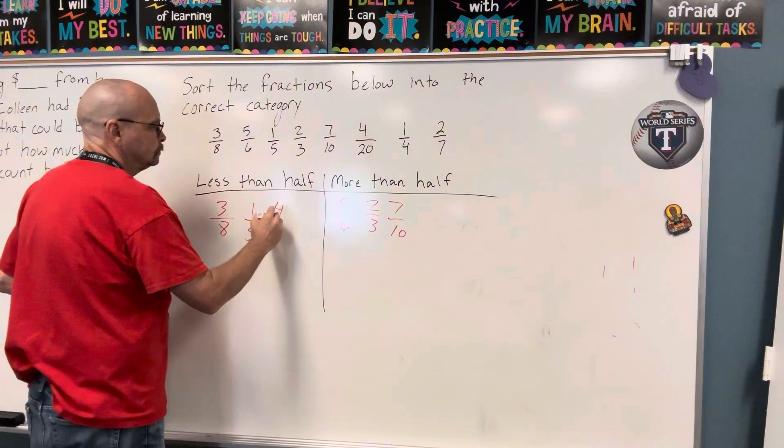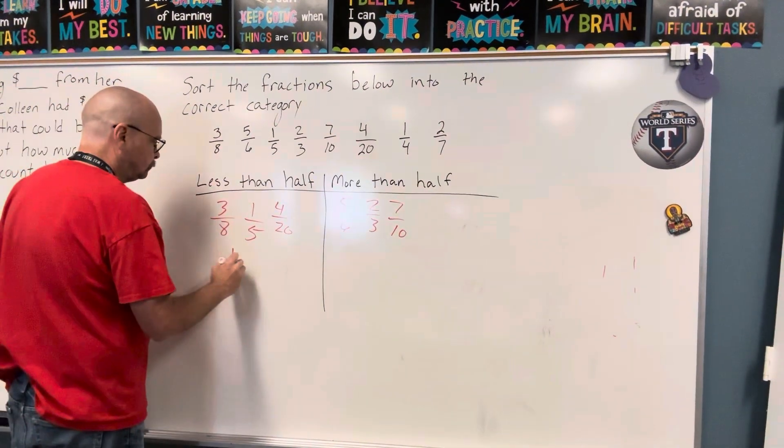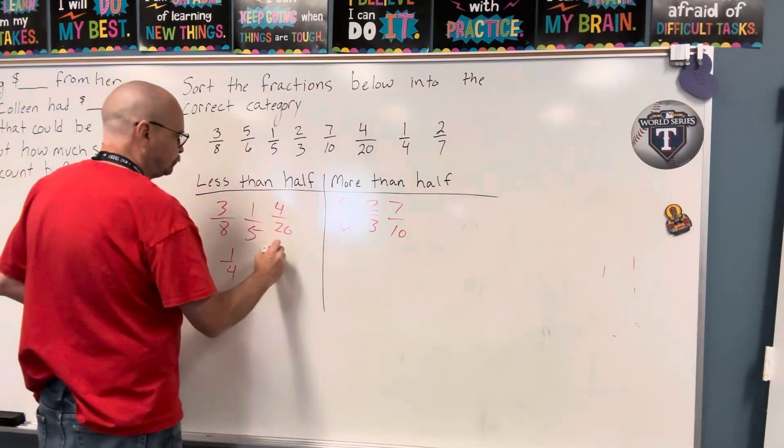Four twentieths. Less than. Less than. One fourth. Less than. And two sevenths. Less than. Less than.